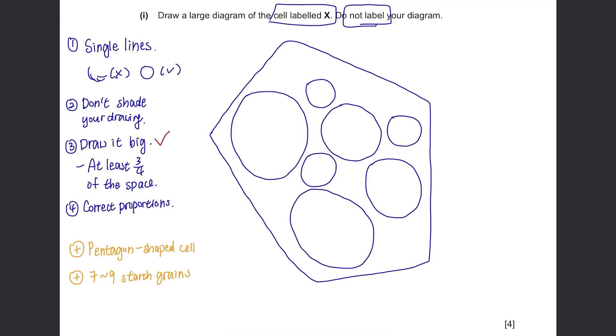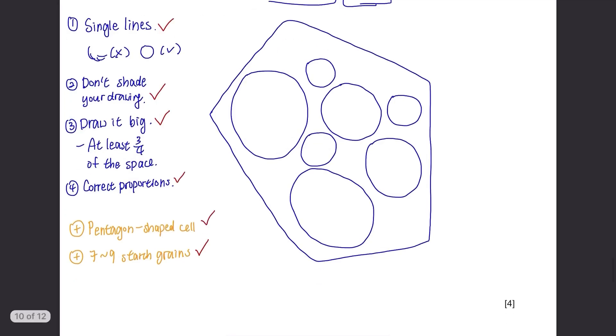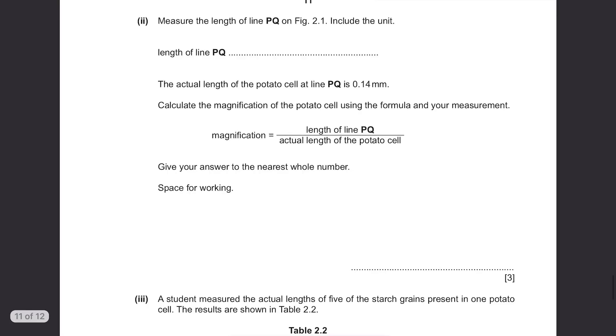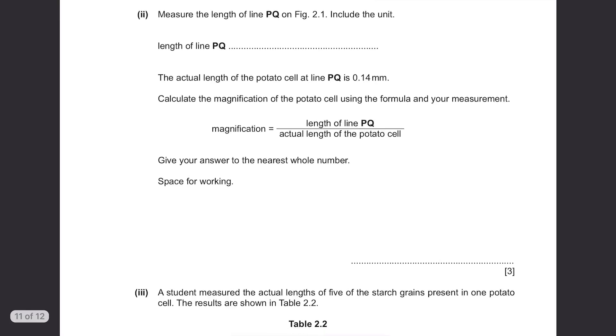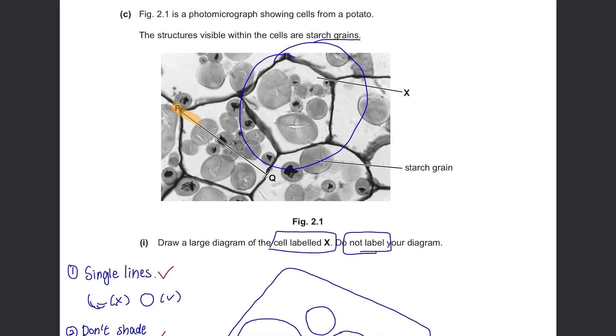Then you need to draw it big and occupy at least third quarter of the space given just to be safe. The proportions should be correct too, big ones drawn big and smaller ones drawn smaller. So this is my drawing of cell X. It's big enough, I've drawn 7 starch grains as shown in the photo. My lines are clear single lines and none of my drawing is shaded. Part C(ii): Measure the length of line PQ on figure 2.1. Include the unit. Use your ruler to measure it. It should be around 45mm. The unit must be in mm.